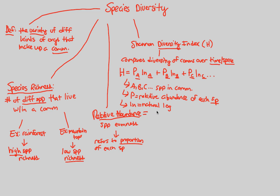If we have a high H value, we equate that to having a high diversity of species in the community. The Shannon Diversity Index gives us a nice quantitative value — the letter H — utilizing the ideas of species richness and relative abundance that we've already established.